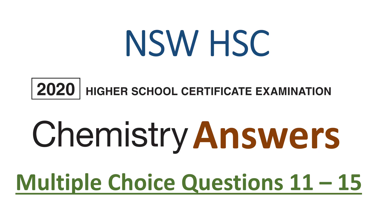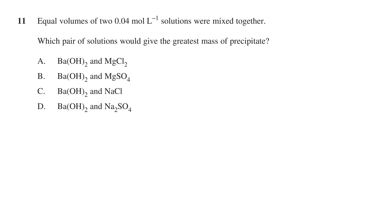In this video, we'll go over the answers to questions 11 to 15 of the 2020 New South Wales HSC Chemistry exam. Question 11 states: equal volumes of two 0.04 molar solutions were mixed together. Which pair of solutions would give the greatest mass of precipitate?